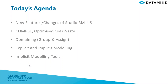You can see the content of my webinar. We will start with the new features and changes in Studio RM 1.6. Then I will talk about the Comp C process, which is one of the most effective commands to optimize ore and waste intervals. After that, we will look at the grouping and assigning tools to create domains. Then I will explain the two general terms used for the modeling process — explicit and implicit — and mention the differences between them. Finally, we will look at the implicit modeling tools and do some practical examples.